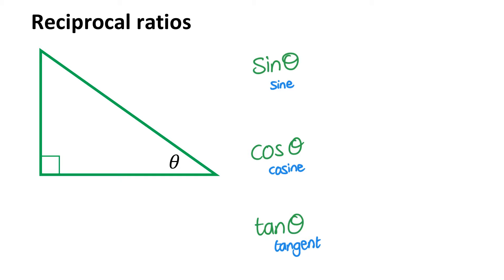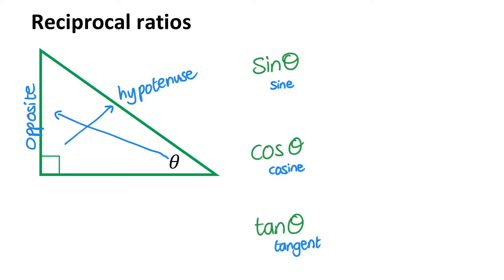Now in a right angle triangle, these ratios refer to fractions or ratios between the sides of the right angle triangle. Let me label the sides quickly. The side opposite the right angle is always called the hypotenuse. The side opposite the angle that you're interested in is called the opposite side.